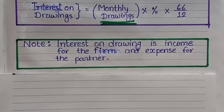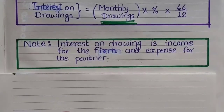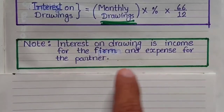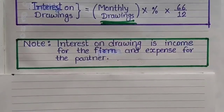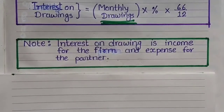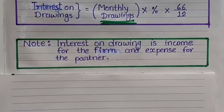One most important note, friends — this will be very useful when solving sums. Interest on Drawings is income for the firm and an expense for the partner. The partner takes money from the business for personal use (drawings), and when he refunds it the interest he pays comes from his own pocket — it is his expense — and that money comes into the firm, making it the firm's income. Keep this in mind.